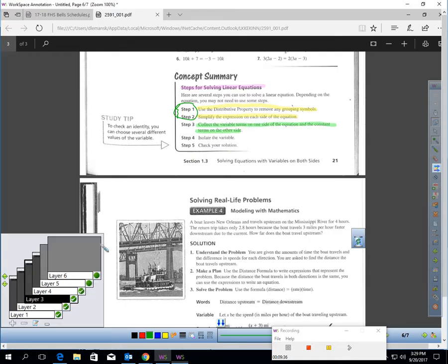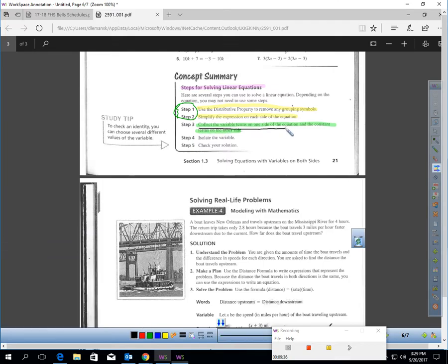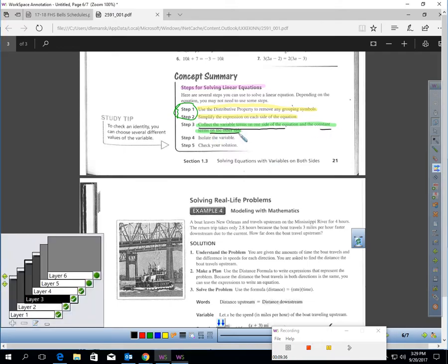The next step. Get all your variables on one side. After you're done with that, then get the constants on the other side, which gets you to the final part. Isolate the variable, which means solve the problem, and then you should check it at the end.